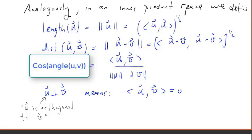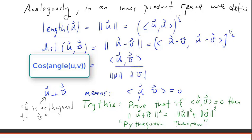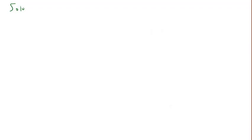Here's a good exercise to try on your own. Using the properties of inner product, prove that if u is orthogonal to v, then the square of the length of u plus v equals the square of the length of u plus the square of the length of v. This is the generalization of the Pythagorean theorem to inner product spaces.